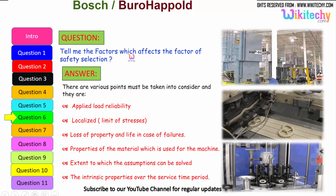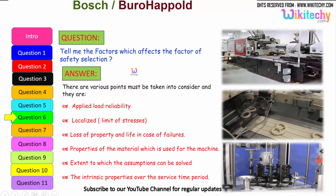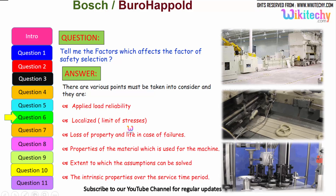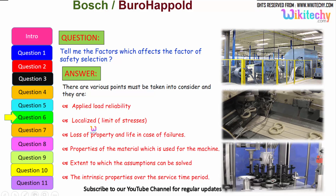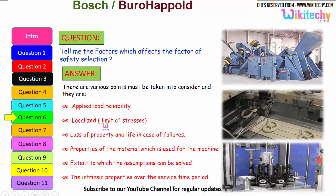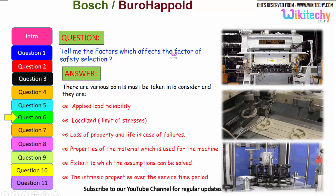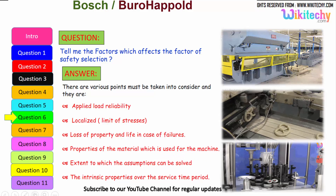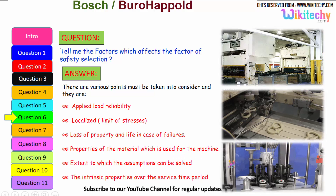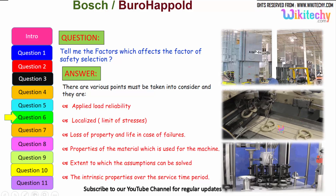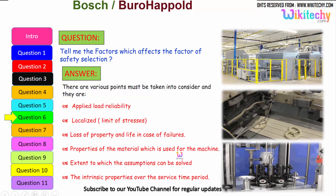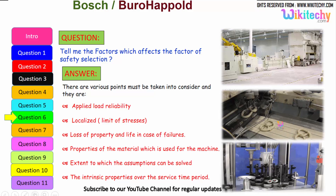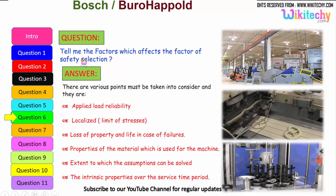Now let us see the factors which affect the factor of safety selection. These include: reliability of the applied load, limit of stresses thus localized, loss of property and life in case of failures, properties of the material used for the machine, the extent to which assumptions can be solved (how much it will extend or compress), and the intrinsic property over the service time period — how it will sustain everything.